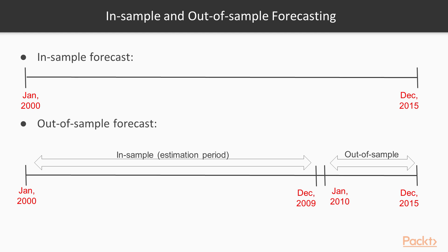For out-of-sample analysis, we divide the data into two parts. The first part is called the in-sample data or training dataset, and the second part is the out-of-sample, test set, or holdout sample. The model is trained on the first part and tested on the second. There is no fixed rule for the split — typically it is 70/30, meaning 70% for training and 30% as the holdout sample. You could also do 80/20 or 60/40 depending on how much data you have.